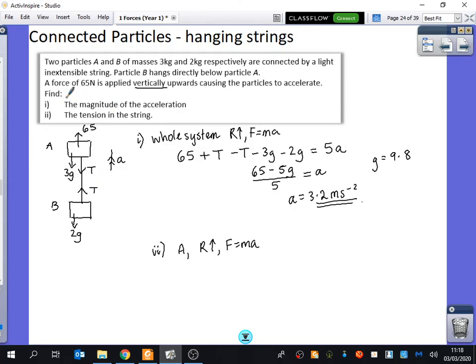Yep. Good. 65 minus T minus 3G equals 3A. Good. And A in this case is 3.2.